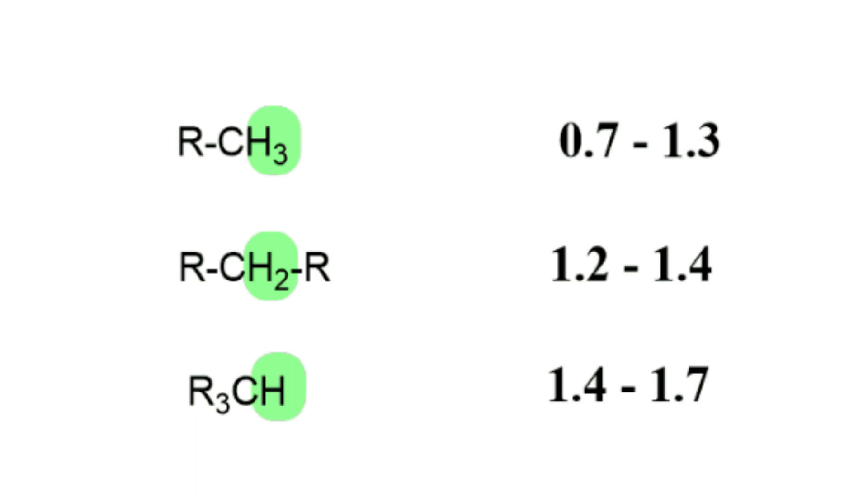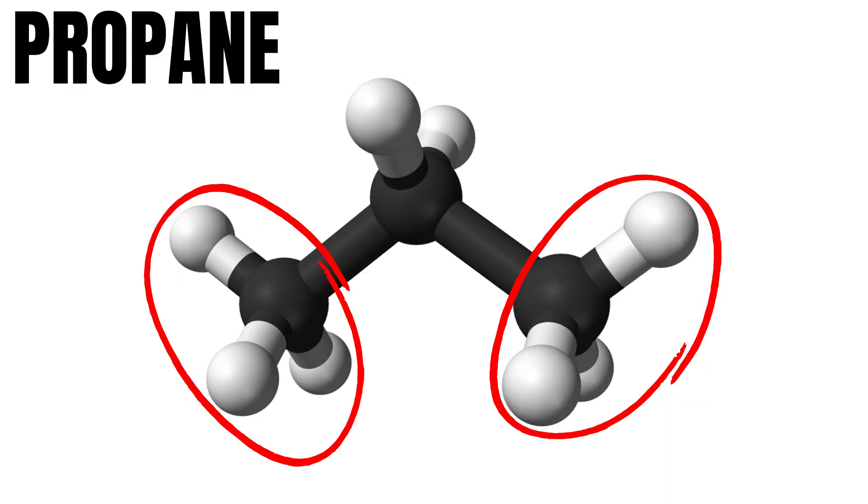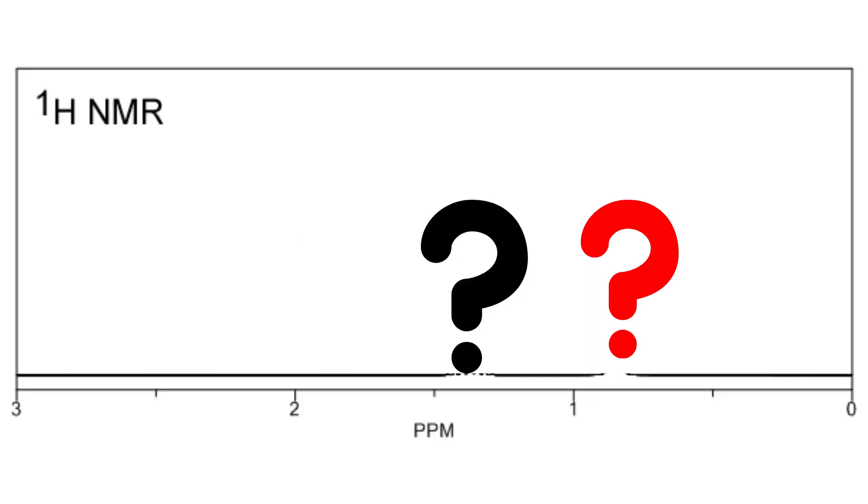From this chemical shift table, link in the description, we can see that the peak will appear around 0.7 to 1.3 parts per million. In addition as they both have two neighboring hydrogens the peak will split into three.